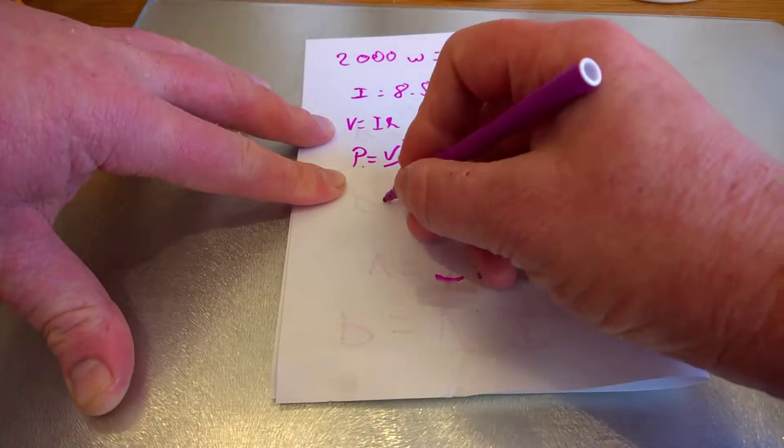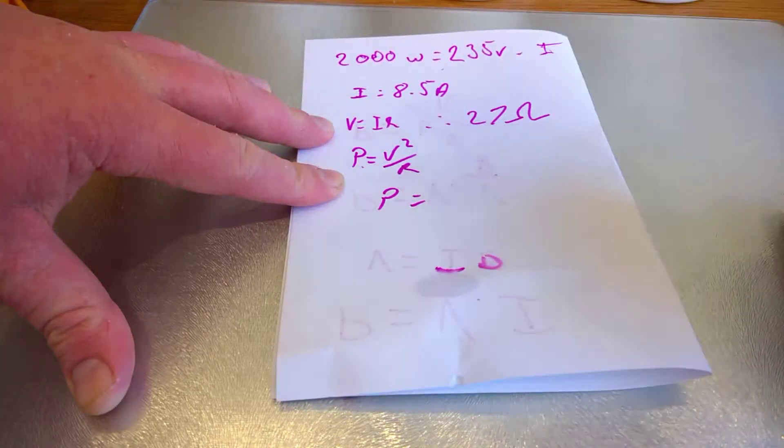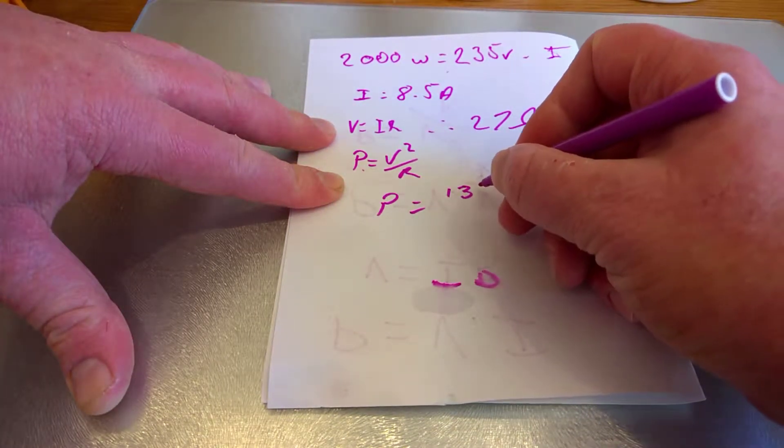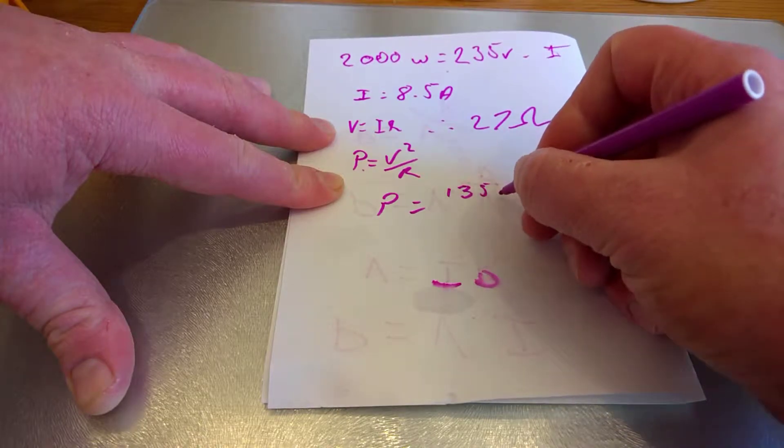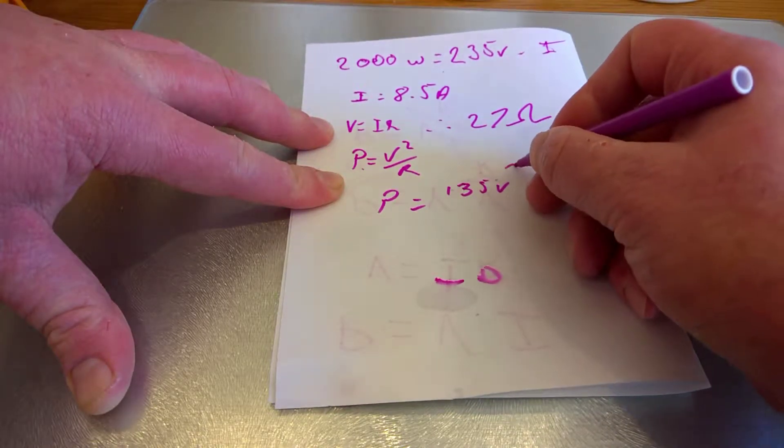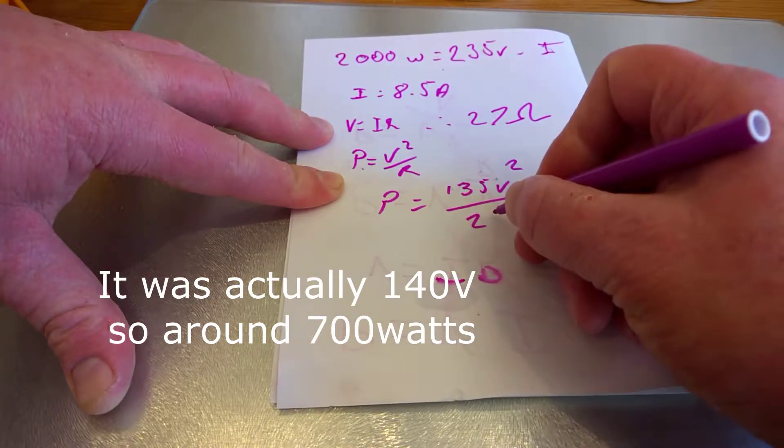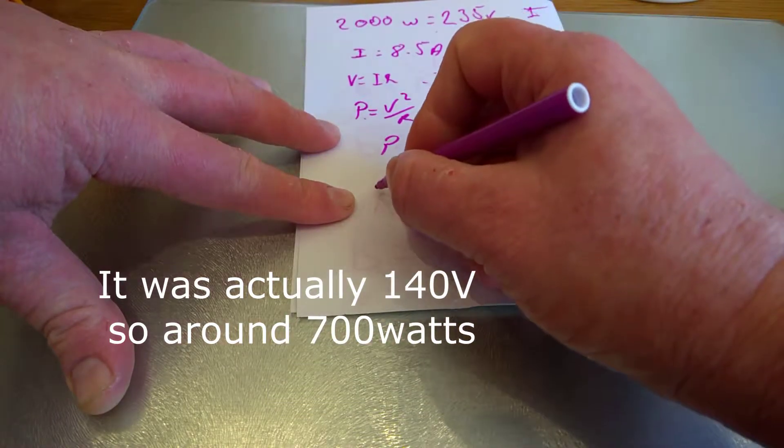So the power that's now consumed is, we've reduced the voltage to about 130, 135 volts, and this would be squared of course and divided by the resistance which is 27, so the power is now about 600 watts. So we've reduced from 2000 down to 600 watts, so let's give it a go.